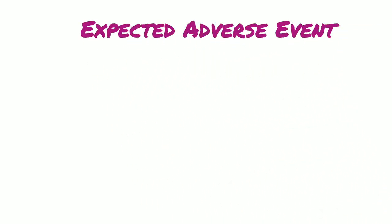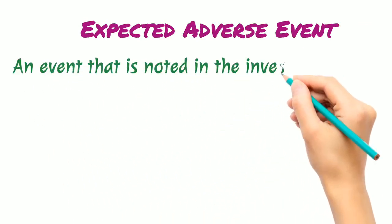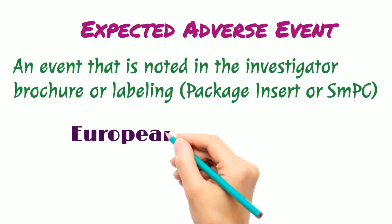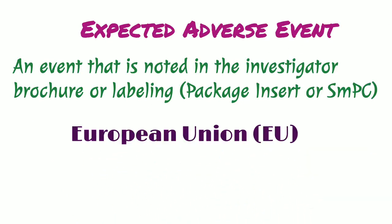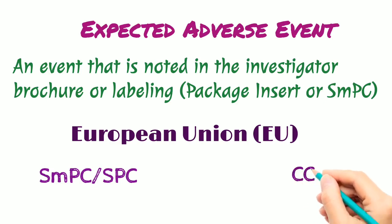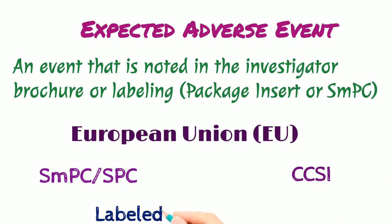Now we will see the expected adverse event. An event noted in the Investigator Brochure or labeling document — that is, the package insert or SMPC — is called an expected adverse event. In the European Union, two different reference documents are used for marketed drugs for expectedness: one is the global EU label (SPC) and the other is the Company Core Safety Information (CCSI). If the event is found in the SPC, it is considered labeled; if not found in the SPC document, it is considered unlabeled. Similarly, if it is found in the core labeling of each member state document, it is called a listed event.